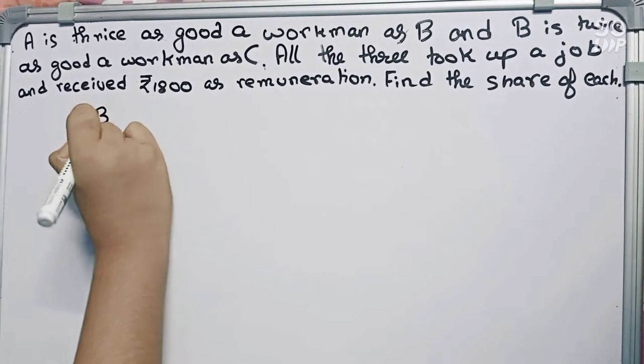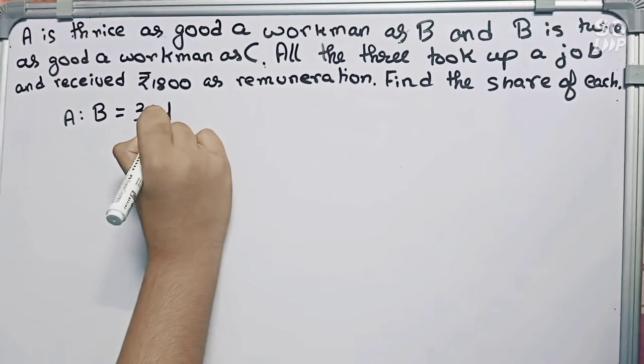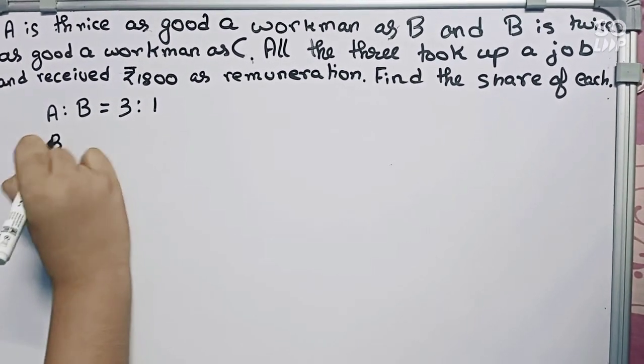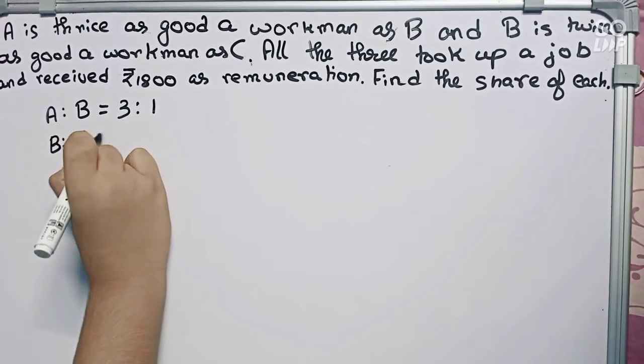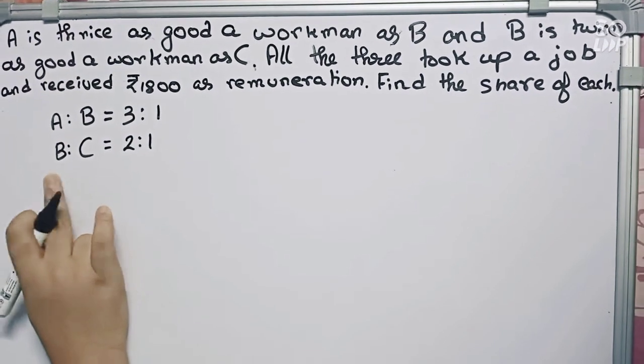A is to B first. So A is thrice, thrice means three, which means 3:1. Now B is to C equals to 2:1. Now I have to multiply these numbers so as to make B as a common term.